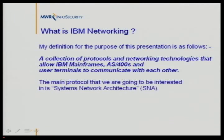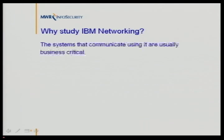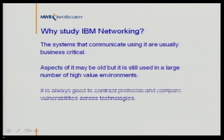The main protocol we're going to be interested in is called Systems Network Architecture, or SNA. This is the IP age, and IBM certainly has lots of support for IP. In today's modern networks there will be both IP and SNA. Why look at IBM networking? If you've got a mainframe, it normally contains your most critical data, so it's important to make sure it's secure. These technologies may be old but they're still deployed in high-value environments — finance, retail, defense, government. IBM networking is also not mentioned in security textbooks; if you open Hacking Exposed, you won't find much about it.